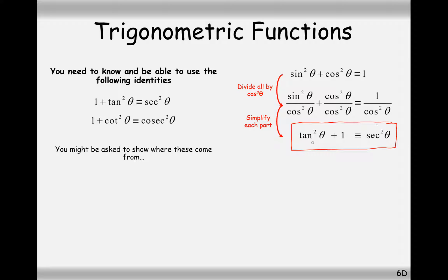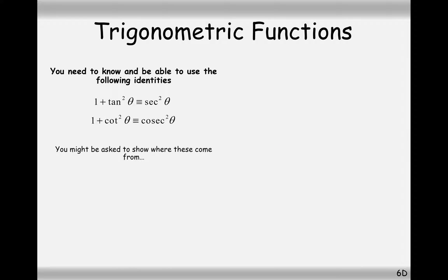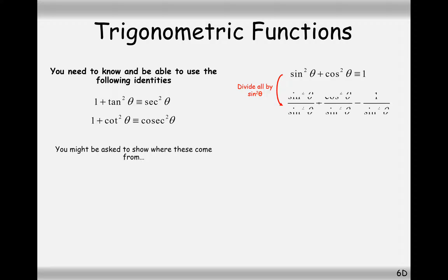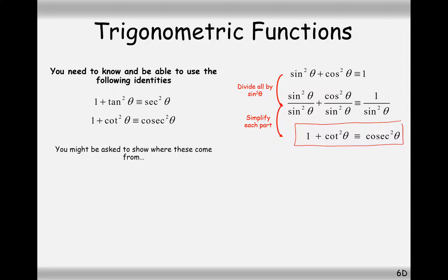It's not in the formula booklet so you won't be able to recall it from there, but you can recall it from sin²+cos²=1. We can do the same thing for the second identity: to make cot, which is cos over sine, divide through by sin². So sin²/sin² + cos²/sin² = 1/sin², giving us 1 + cot² = cosec². Again, I don't remember this formula - I remember to take sin²+cos²=1 and divide through by sin² to create it yourself.